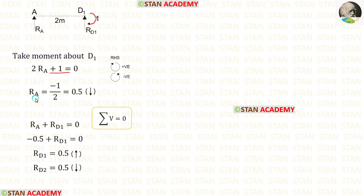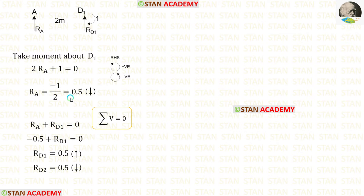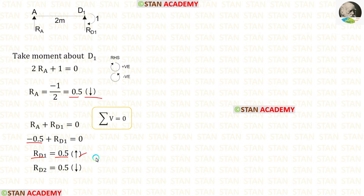After the calculations, we are getting a negative value for RA. That means our assumption is wrong — we assumed RA is acting upwards, but actually it is acting downwards. Now let us apply sigma V = 0 and calculate RD1. RA is acting downwards, so it should be negative; when we take this negative value to the right side, it will be positive. In this way, we are getting RD1 acting upwards.